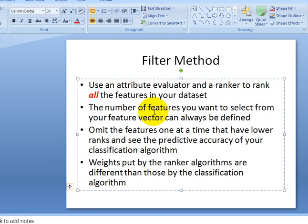One problem with the filter method is that the weights put by the ranker algorithms to rank the features can be very different from the weights put by the classification algorithm, so your model can become overfit. The ranker algorithms are used to rank your features, and by omitting one feature at a time from the rank list, you then use a classification algorithm like Naive Bayes or Bagging to see how it performs on your dataset with the features that are not omitted.